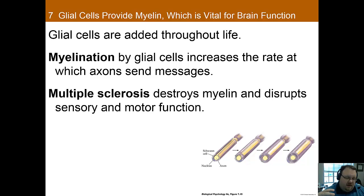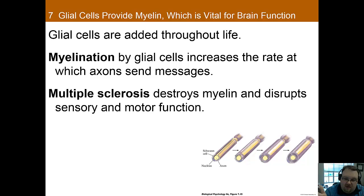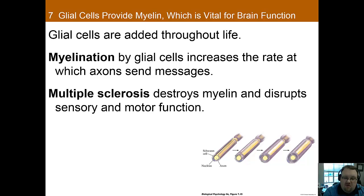Once you have the connections, you have myelination. Glial cells are added throughout life, and one of their main purposes is to myelinate axons so that connections are faster. Myelination by glial cells increases the rate at which axons can send messages. Multiple sclerosis destroys myelin and disrupts sensory and motor function — what it actually does is desynchronize the activity in the brain, which causes a lot of disruption for the sensory and motor systems.